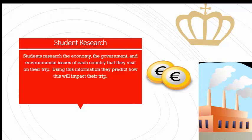Student research would be the next element of the project, and students would have to engage in research about each country — the economy, the government, and environmental issues on their trip. Using this information, they will predict how it could impact their trip. For instance, if there is an economic crisis in Spain, maybe they want to think about whether it could cause some type of political unrest. Or maybe they're going to London in the summer and smog is really bad, so maybe they don't want to pay the extra money for that hotel room with the balcony. They want to see how all of this will impact their trip, and they will write about it in their travel journal.